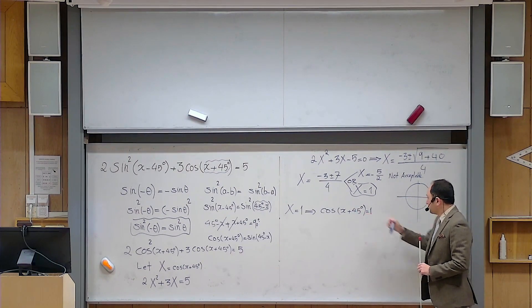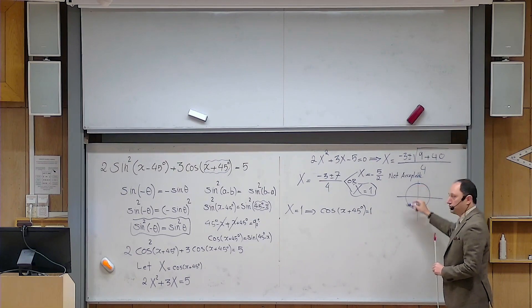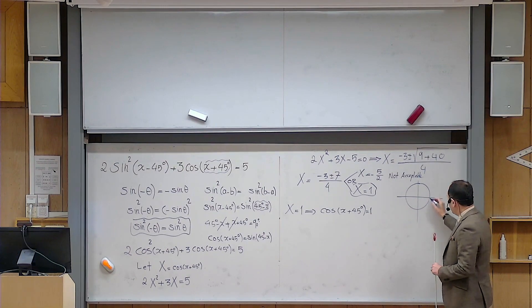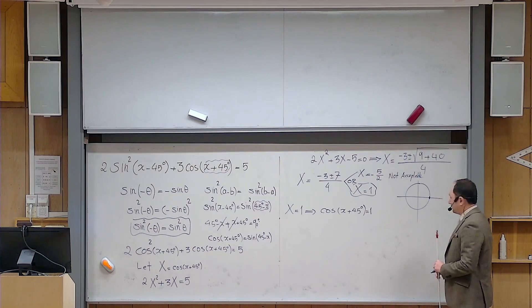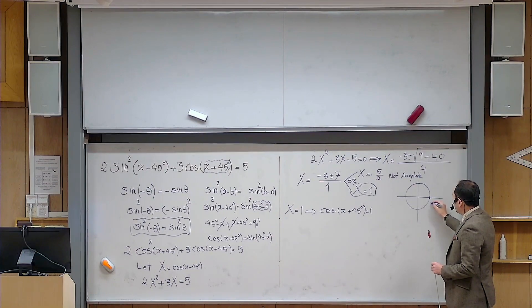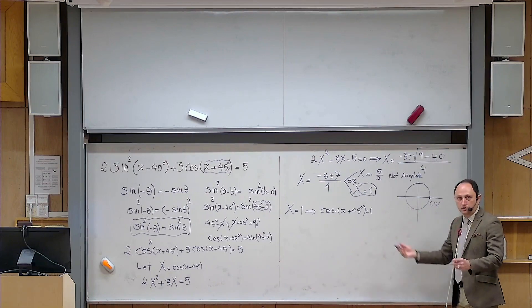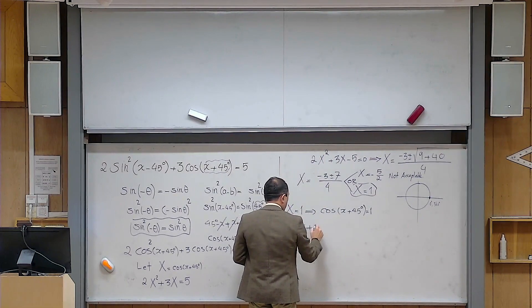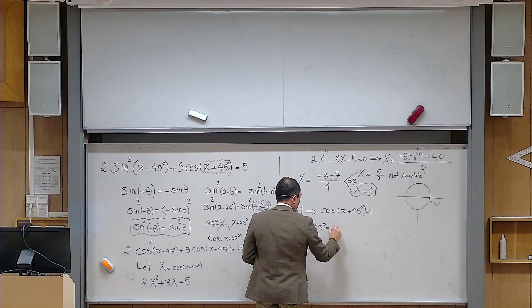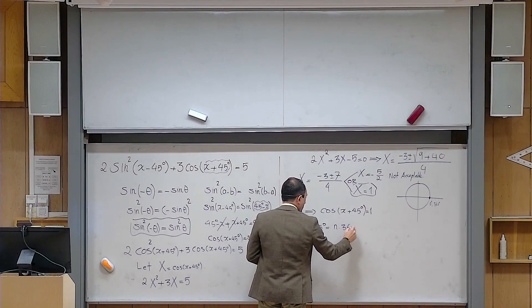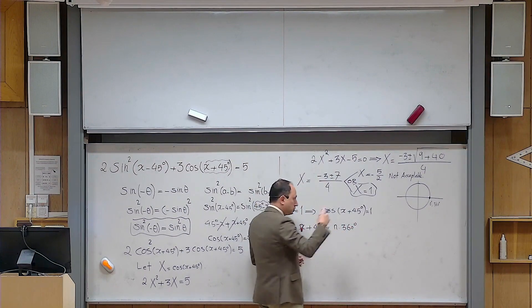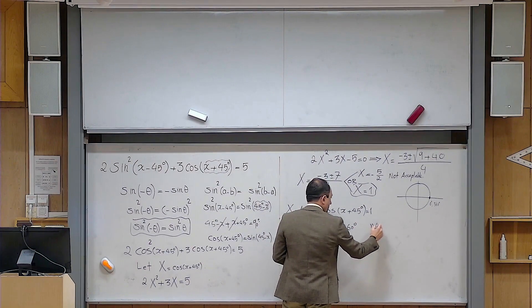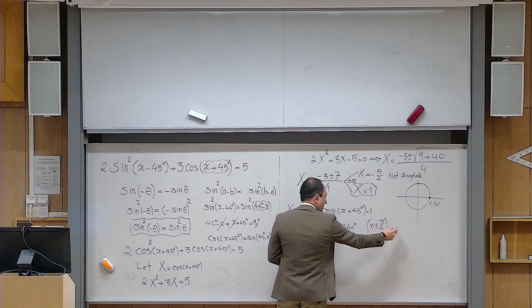Now cosine is supposed to be 1. There is only one point on the unit circle whose x-coordinate is 1, and that point is here. So what is this point? This point corresponds to 0 degrees, 360 degrees. Any multiple of 360 degrees is acceptable. So this means that x plus 45 degrees equals n times 360 degrees, an integer multiple of a full round. So this n is an integer. n belongs to the set of integers.